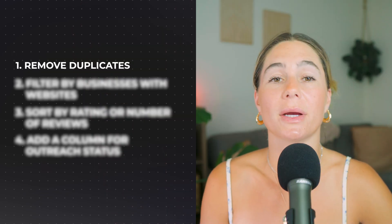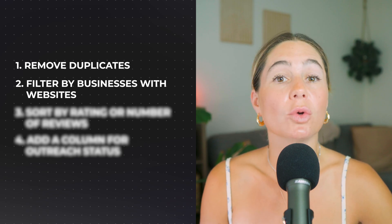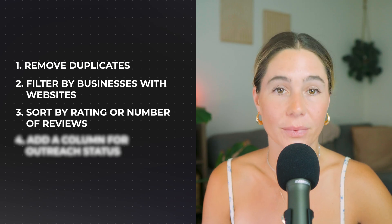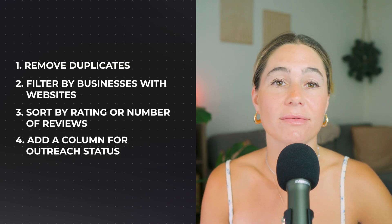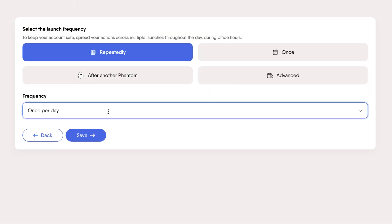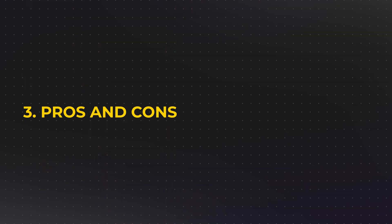Step six is to clean your lead list and segment it. Once you have the raw file, go through and clean it up — remove duplicates, filter by businesses with websites if you only want a digital presence, and sort by rating or number of reviews to prioritize active businesses. You can add a column for outreach status: contacted, replied, follow-up. If you're planning to use this for email outreach or sales prospecting, this step helps you stay organized. You also have the option to schedule the automation — for example, set it to run every seven days and you'll get a fresh list of businesses each week without lifting a finger.